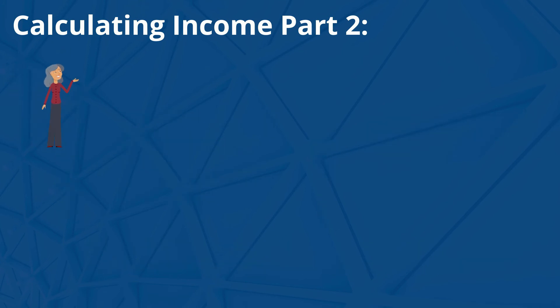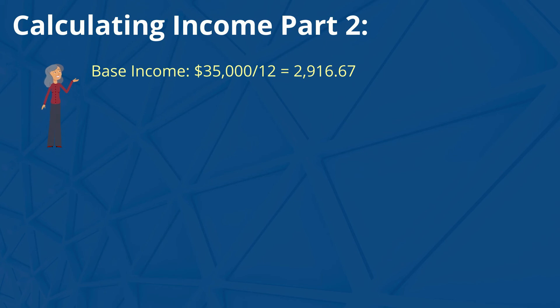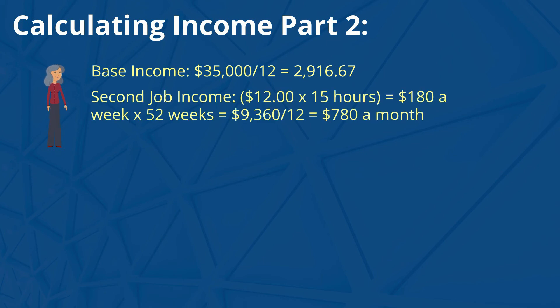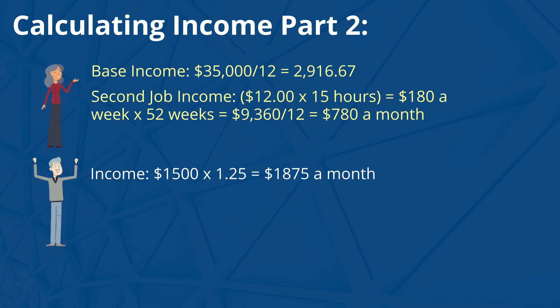Let's look at Savannah's income first. Her base income: $35,000 divided by 12 is equal to $2,916.67. Now for Savannah's second job, we'll take $12 an hour times 15 hours a week is equal to $180 a week, times 52 weeks is equal to $9,360, divided by 12 is equal to $780 a month. For Julio's income, we'll take his $1,500, which grossed up by 25% is equal to $1,875 a month.